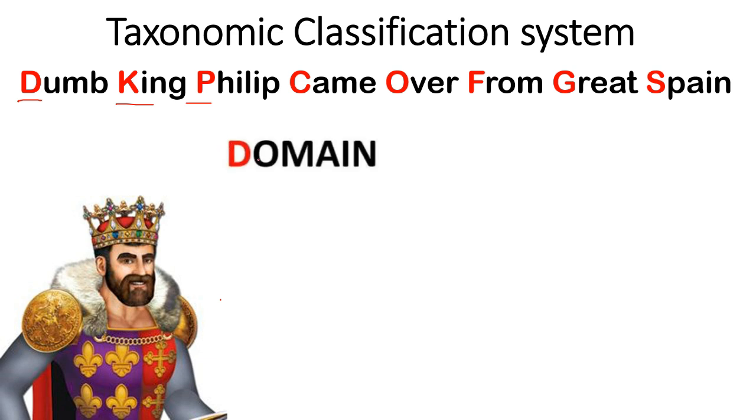The first one, D, stands for Domain—the largest and highest in this hierarchy. If you break down Domain, we get K for Kingdom. Then if you break down Kingdom, we get P for Phylum. Then if you break down Phylum, we get Class.